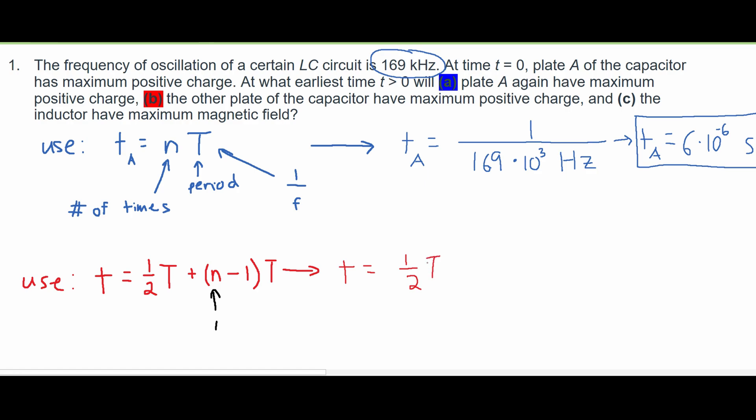Now, we do know what our 1 over F is. We know what our frequency is, because we used it here, and we have it right here. So what we can do is convert this T to 1 over F. And then we are going to say T is equal to 1 half F, or 1 over 2F.